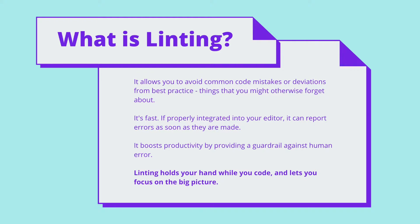Linting is useful because it allows you to avoid common mistakes or deviations from best practice. It's often used as a guardrail to protect you from the sort of small mistakes that might often slip your mind. It can do this effectively because it's fast. Linters run very quickly and can be integrated into your editor so that errors are reported as soon as they're made. The combination of detecting common mistakes and being fast means that linting is a big productivity booster. Linters hold your hand effectively while you code, letting you focus more on functionality and less on the quirks of whatever programming language you happen to be writing in.